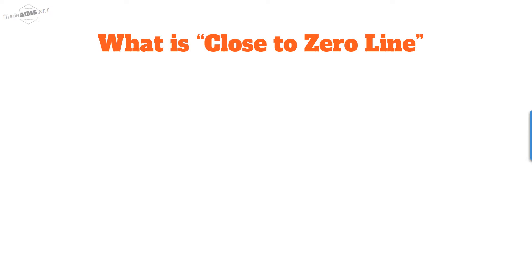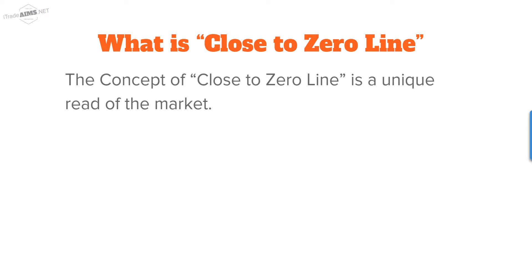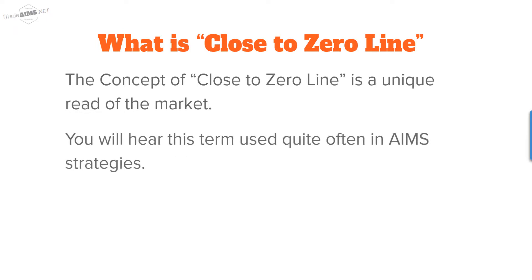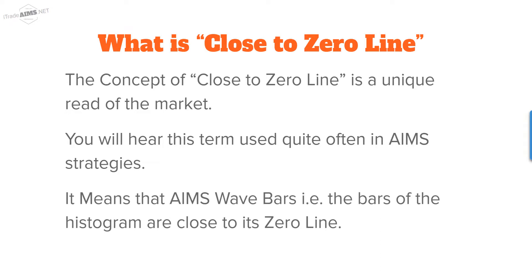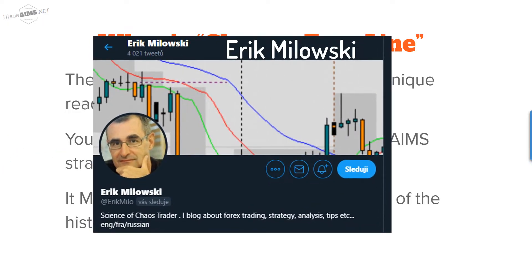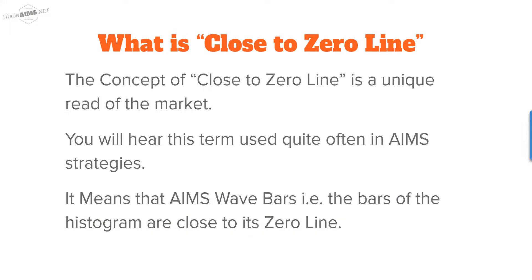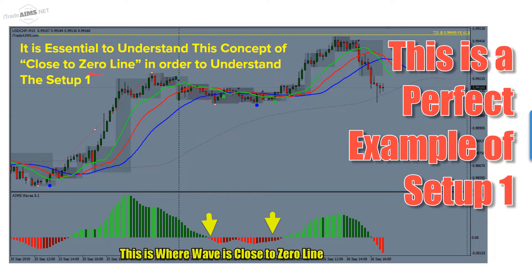The concept of 'close to zero line' is a unique read of the market. You will hear this term used quite often in AIMS strategies, in the chat rooms, and everywhere we talk. It means that the AIMS Wave histogram bars are close to their zero line, and it's very important — it is essential to understand this concept of close to zero line in order to understand Setup One.